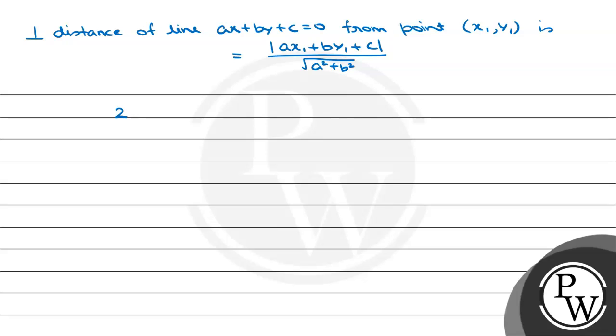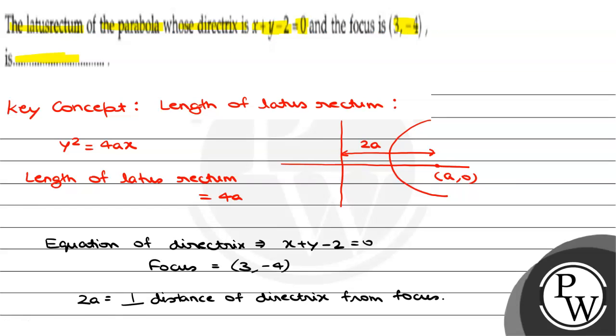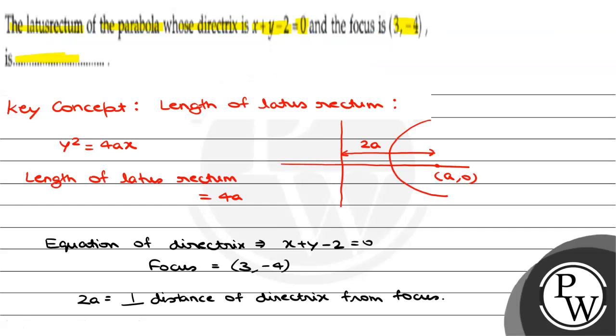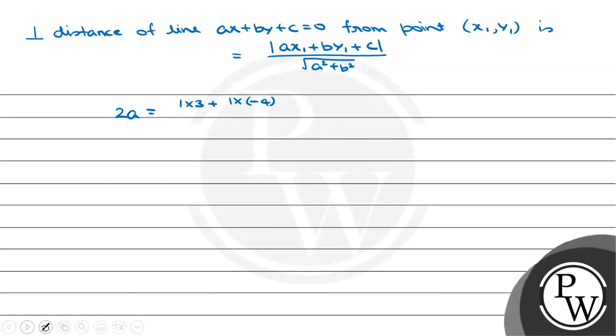Now, 2a will be equal to what? The coefficient of our equation is 1, so it will be 1 times 3 plus 1 times (-4) and then we have (-2). So, mod of this upon square root of 1 squared plus 1 squared.